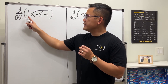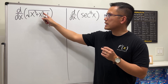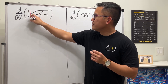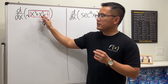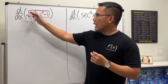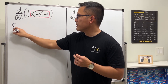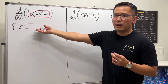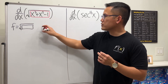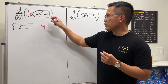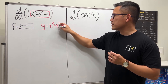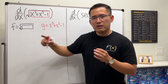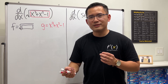Let's do the first one: we will differentiate the square root of x to the third power plus x to the second power, minus one. Notice that we have an inner function. The outer function is the square root — I'll call that f — it's just the square root of a box. Then the inner function we label as g, which is x³ + x² − 1. Now just focus on that.